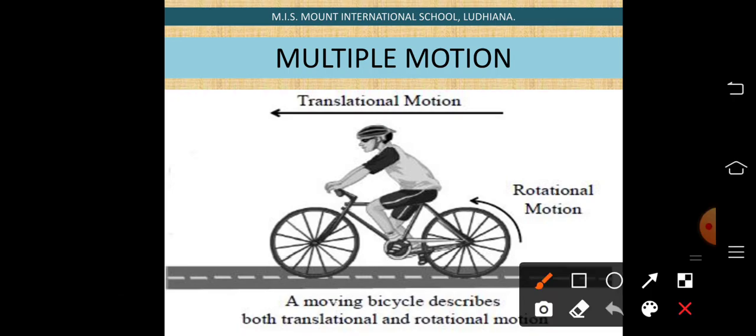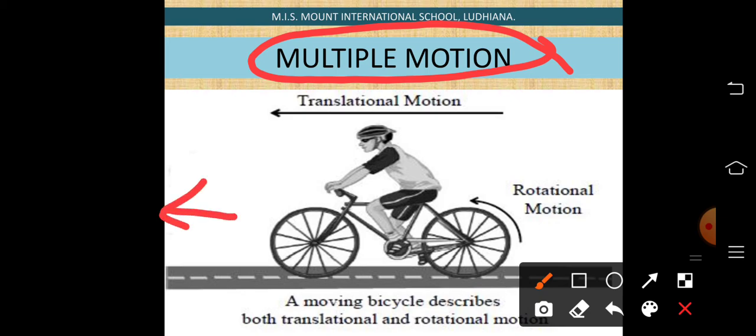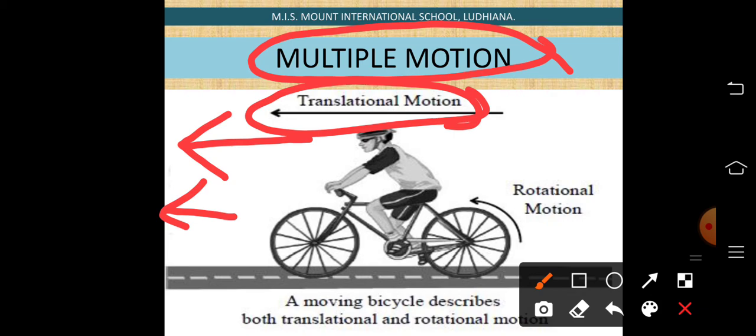There is one more type of motion in which a number of motions are combined. Such a motion is known as multiple motion. Here I have taken the example of a bicycle. The rider moves the bicycle in straight motion which is known as translational or rectilinear motion. But if you look at the wheels of the bicycle, they are moving in rotational motion. Both translational and rotational motions are combined together to move the bicycle. Such a motion in which more than one motion is combined is known as multiple motion.